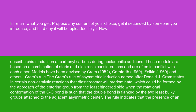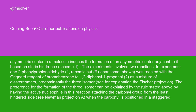Cram's rule of asymmetric induction, named after Donald J. Cram, states in certain non-catalytic reactions that the diastereomer will predominate which could be formed by the approach of the entering group from the least hindered side, when the rotational conformation of the C-C bond is such that the double bond is flanked by the two least bulky groups attached to the adjacent asymmetric center. The rule indicates that the presence of an asymmetric center in a molecule induces the formation of an asymmetric center adjacent to it based on steric hindrance, scheme 1.